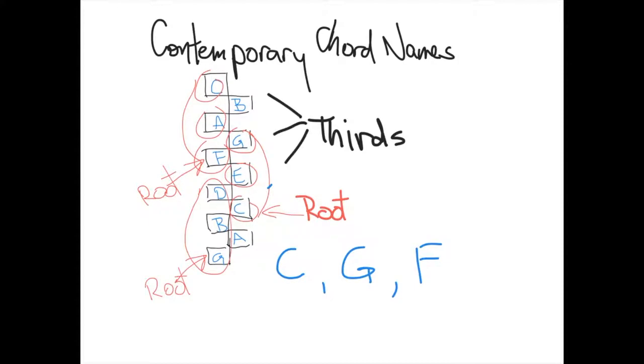This is so common that it needs no further label. What could be more simple? Here's a C chord. Here's an F. There's a G. Simple one-letter label is sufficient for more than half of the chords that you'll see in contemporary pop music.